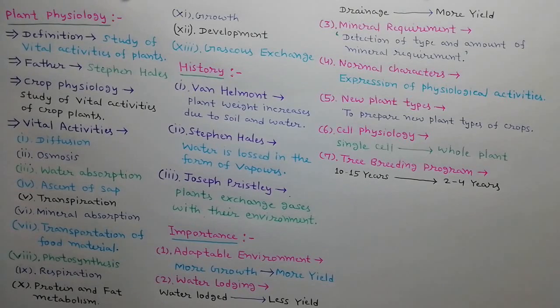Regarding tree breeding program, sexual maturity in plants takes a long period of time, such as 10 to 15 years. But by changing the physiological structures, we can reduce this time up to 2 to 4 years.